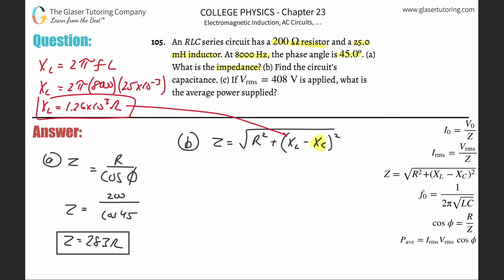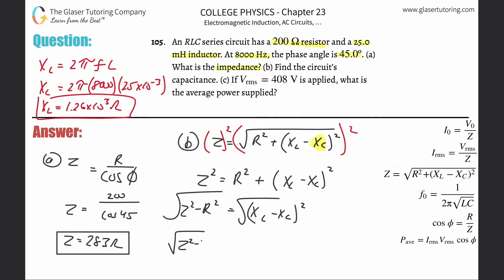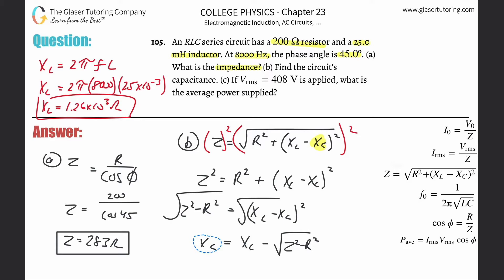Now I'll do some algebra. First, square both sides to get rid of the radical: Z² = R² + (X_L − X_C)². Subtract R² from both sides: Z² − R² = (X_L − X_C)². Then take the square root of both sides: √(Z² − R²) = X_L − X_C.